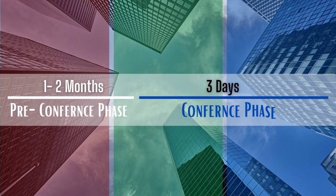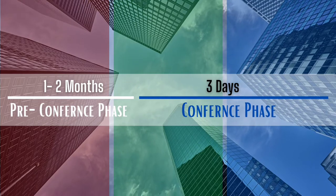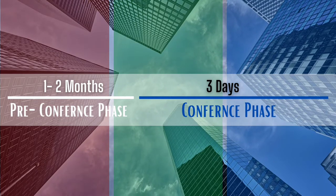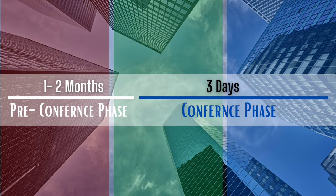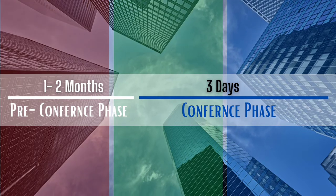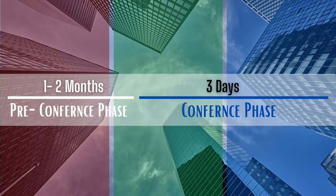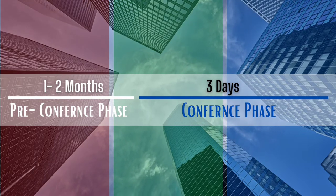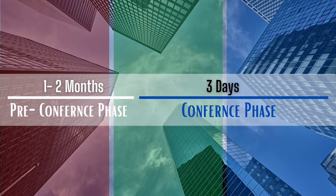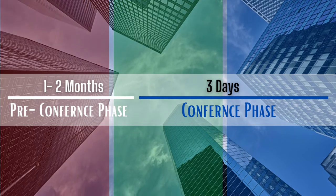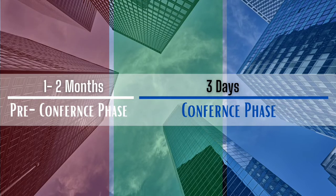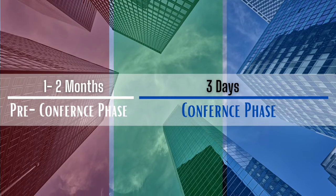The conference phase has various stages of its own, which are determined by and vary based on three major rules of procedures. These three major rules of procedures have their common roots in Robert's Rules of Order and the UN procedure, but vary in terms of the goals they aim to achieve.